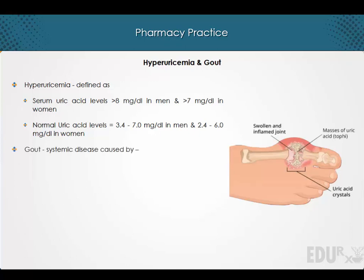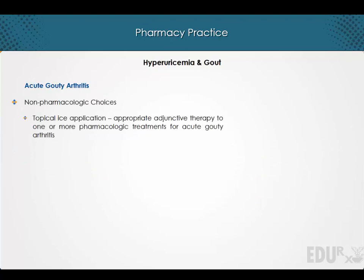Gout is a systemic disease caused by the buildup of uric acid in the joints causing inflammation, swelling and pain. Topical ice application is an appropriate adjunctive therapy to one or more pharmacologic treatments in the management of acute gouty arthritis.